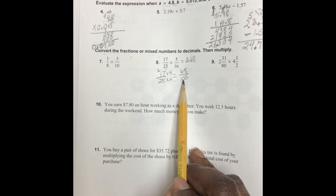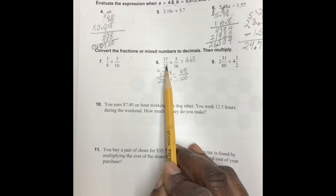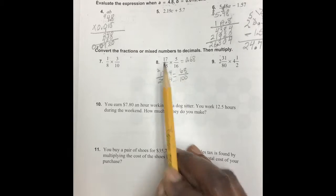And therefore we know that this would be 68 hundredths, and that would be our decimal for this particular value. And that's when I discovered that I was not recording.